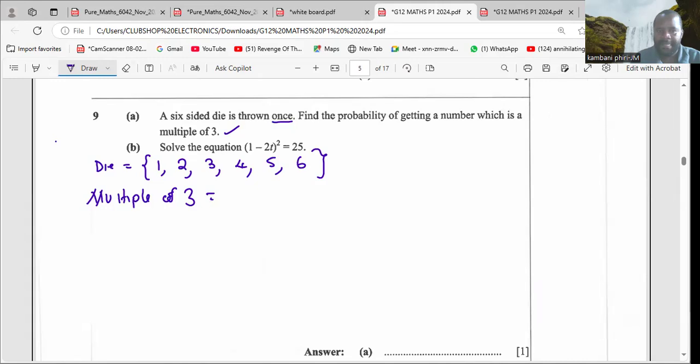In simple terms, we can look for numbers where three can divide into. In this case, three and six. These are the multiples of three. Therefore, probability of multiple of three is equal to probability of three or probability of six.